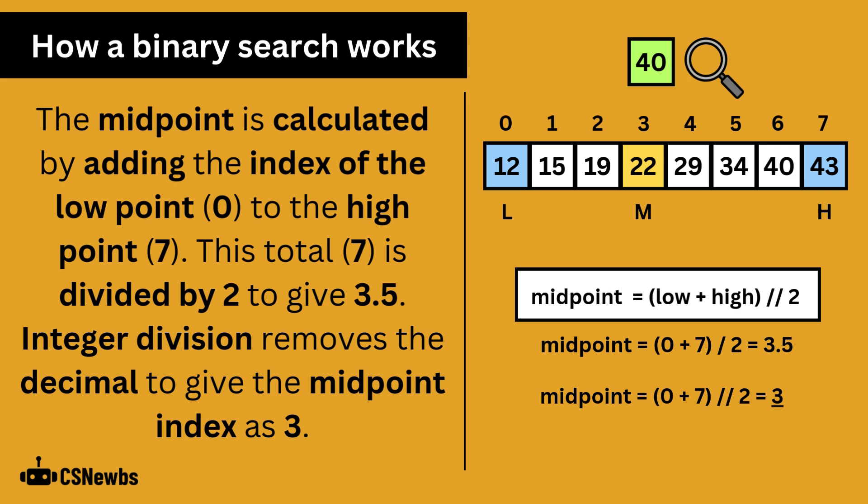If that was confusing, a less technical way to work out the midpoint is to count how many values remain and divide this by 2 and then round down if you need to. So here there are 8 values. Divide this by 2 and the midpoint will be the 4th value along.